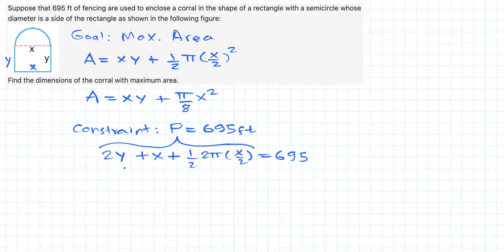Simplifying, isolating y, you're going to get that y is equal to 347.5 minus (2 plus pi over 4) times x. Great.